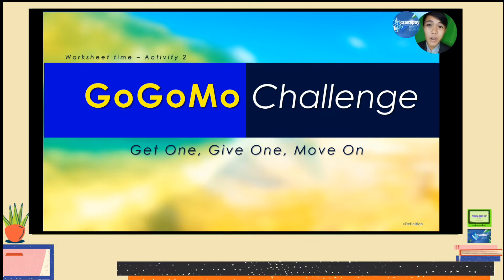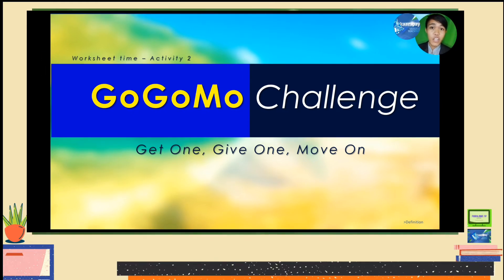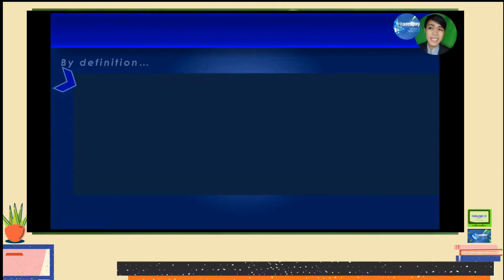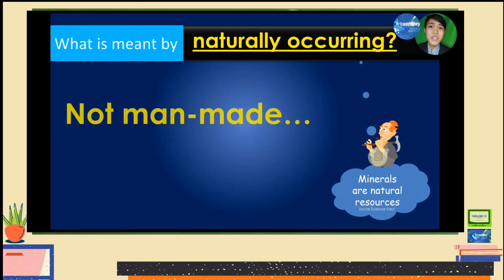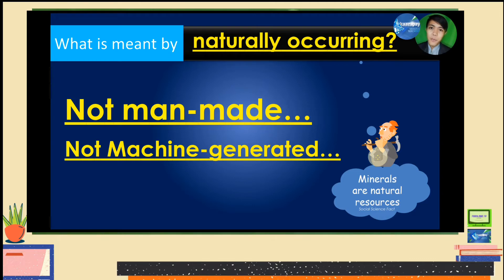How was your GoGoMo Challenge? I hope you are keeping notes. Did you know that by definition, according to your Earth Science discipline, when we say mineral, it is a naturally occurring inorganic solid with an orderly crystalline structure and a definite chemical composition? Let's discuss the highlighted words one by one. First, what is meant by naturally occurring? A mineral is not man-made and not machine-generated — simply, it is made by nature. Your social science tells you that minerals are natural resources; they came from nature.